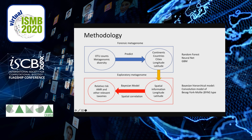Schematically, our methodology can be split into two parts. The blue part is a prediction part related to forensic metagenome tasks — how to use the bacteria OTU counts and metagenomic diversity in order to predict their origin from continents, countries, and cities using longitude and latitude. For the purposes of this, we use three machine learning models: random forest, neural network, and GBM.